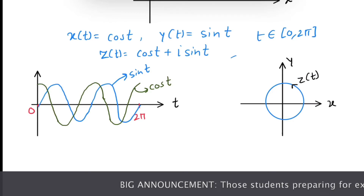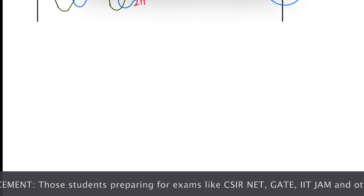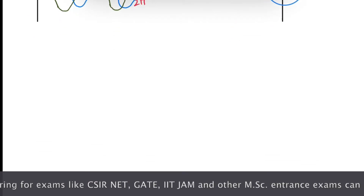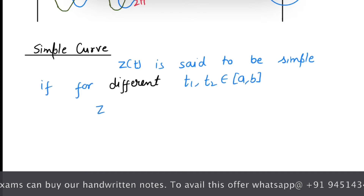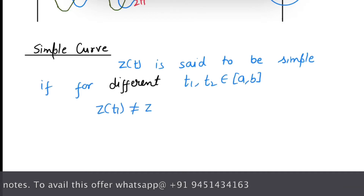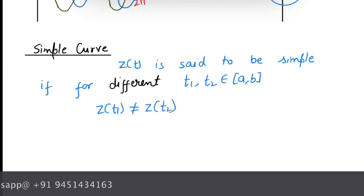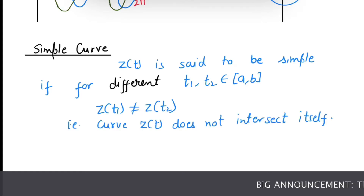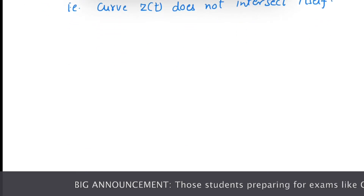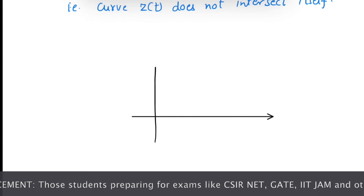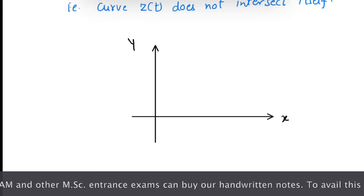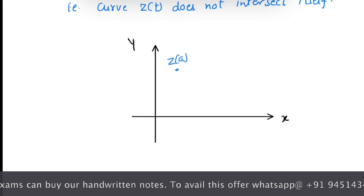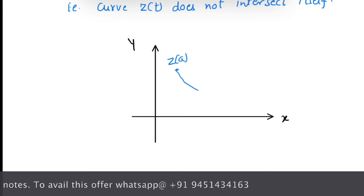I hope you got the idea about curves. Now, this curve z(t) is said to be simple if for different values t₁ and t₂, z(t₁) is not equal to z(t₂). That is, the curve z(t) does not cross itself. Now see an example.